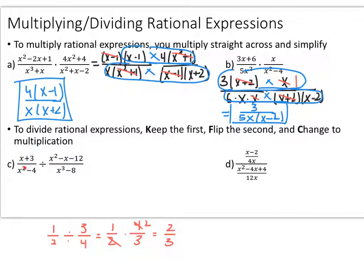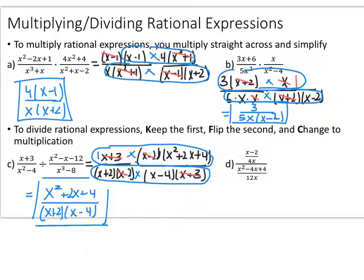Now try this division example with rational expressions using the same process. Remember to factor everything first before multiplying. Keep the first expression the same, factoring its denominator into x plus 2 times x minus 2. Flip the second, factoring its numerator — a difference of cubes — into x minus 2 times x squared plus 2x plus 4, and factor its new denominator into x minus 4 times x plus 3, changing to multiplication. Cancel an x plus 3 and an x minus 2. You end up with x squared plus 2x plus 4 over x plus 2 times x minus 4.